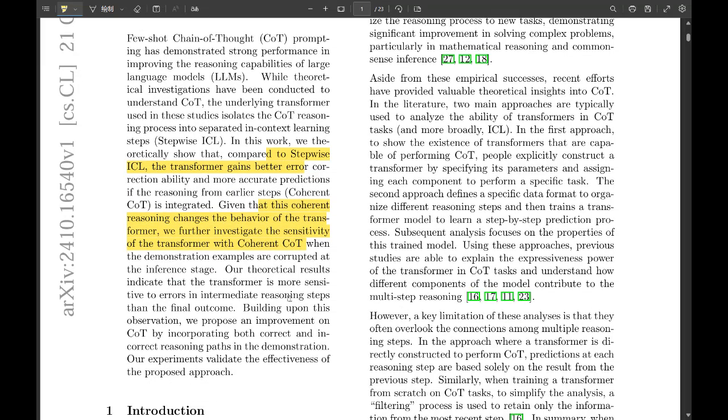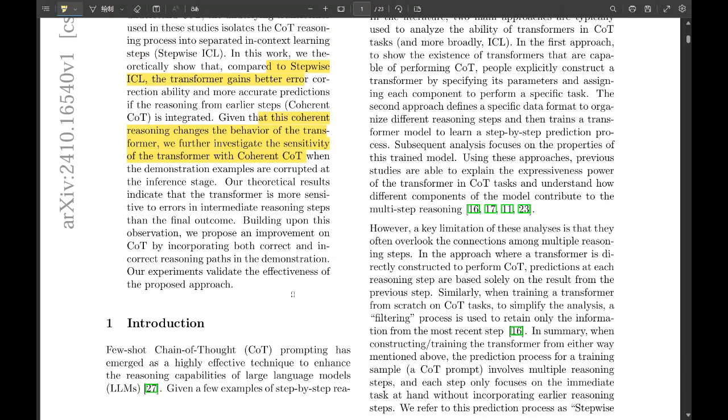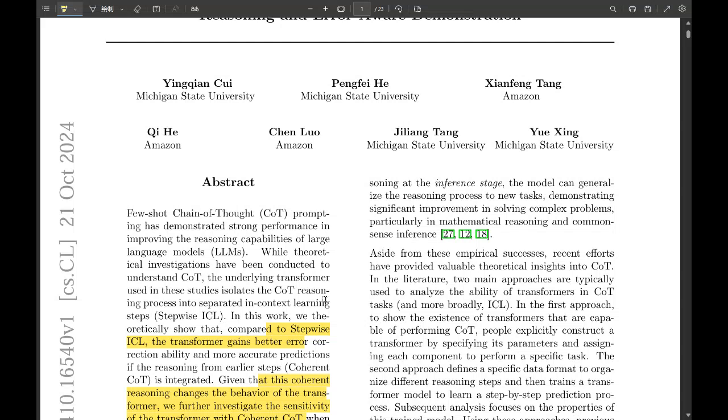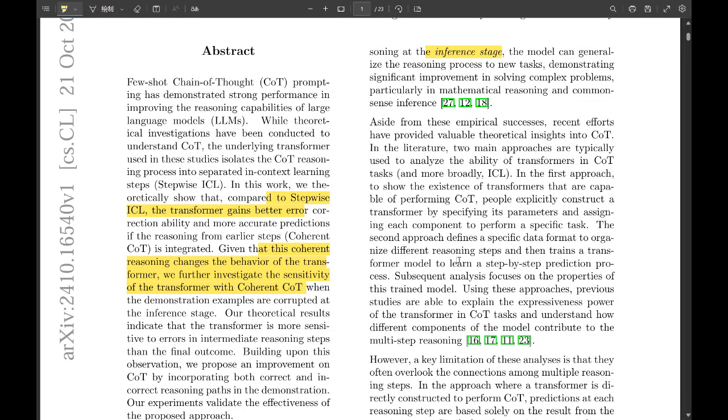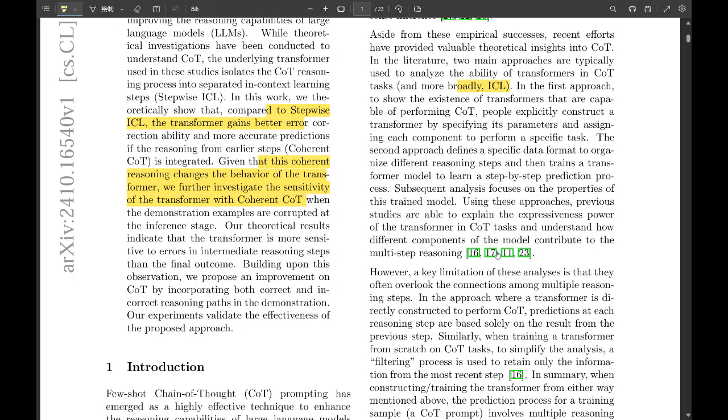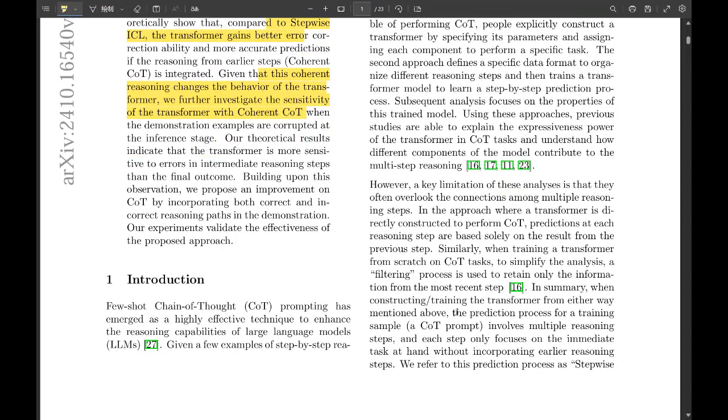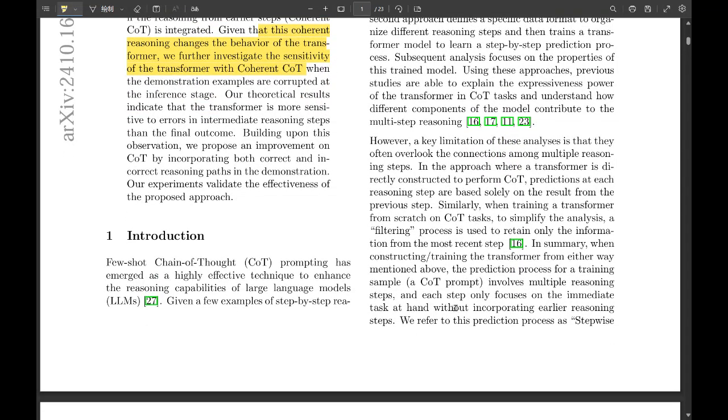Alright. So, what's the core idea they're trying to prove? What's the big takeaway? Well, they start by saying there are two distinct ways LLMs can reason. Two paths. They call them Stepwise ICL and Coherent CoT. ICL? Call those acronyms. But stick with me. ICL stands for In Context Learning. And Stepwise ICL, you can think of it like giving the LLM a few worked examples before throwing a new problem at it. Got it. But here's the thing. It tackles each step in isolation.